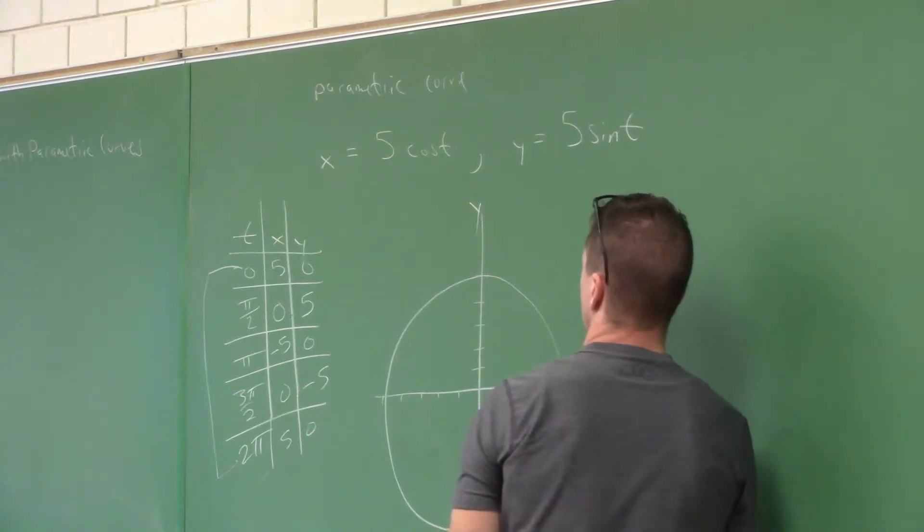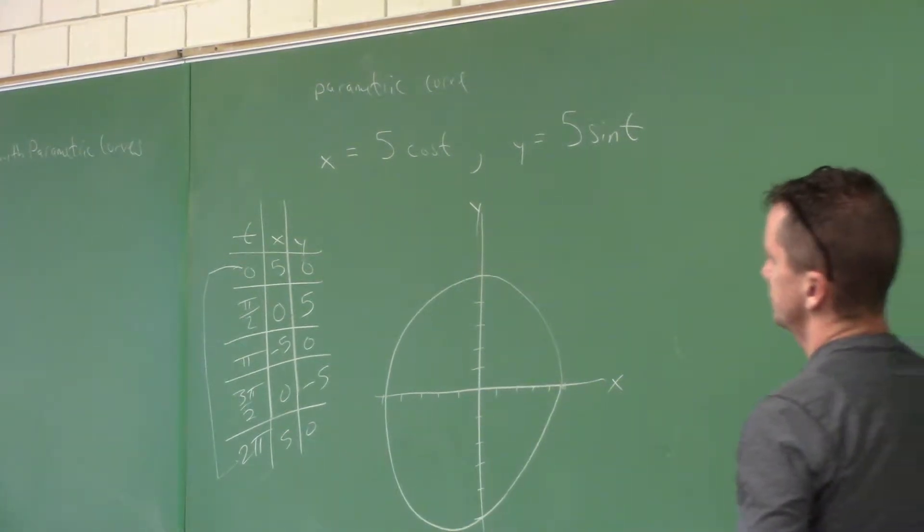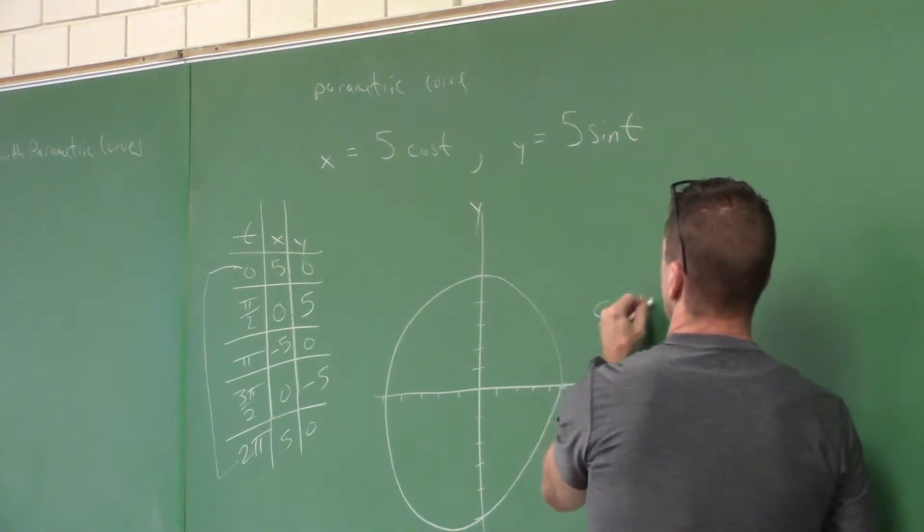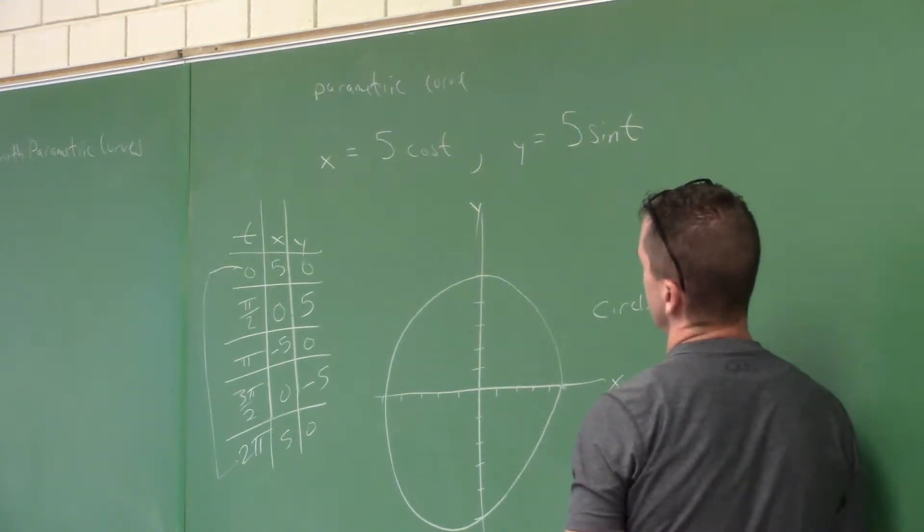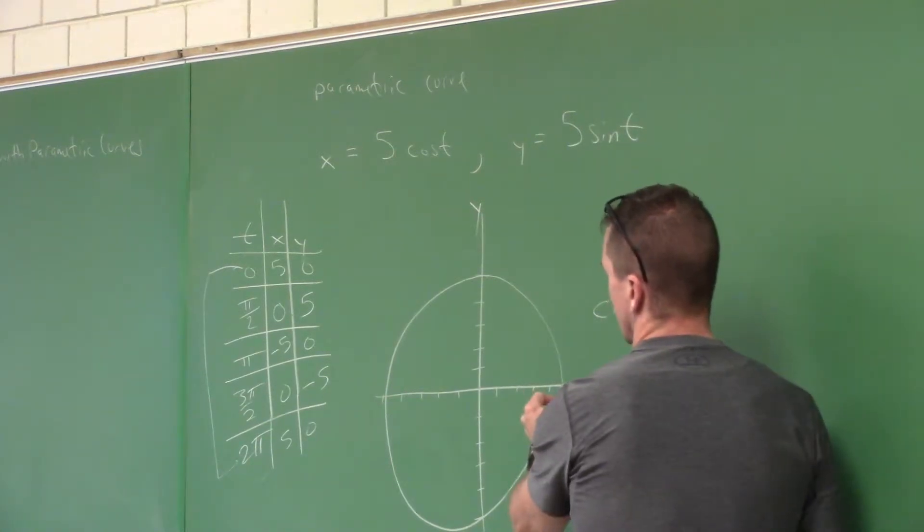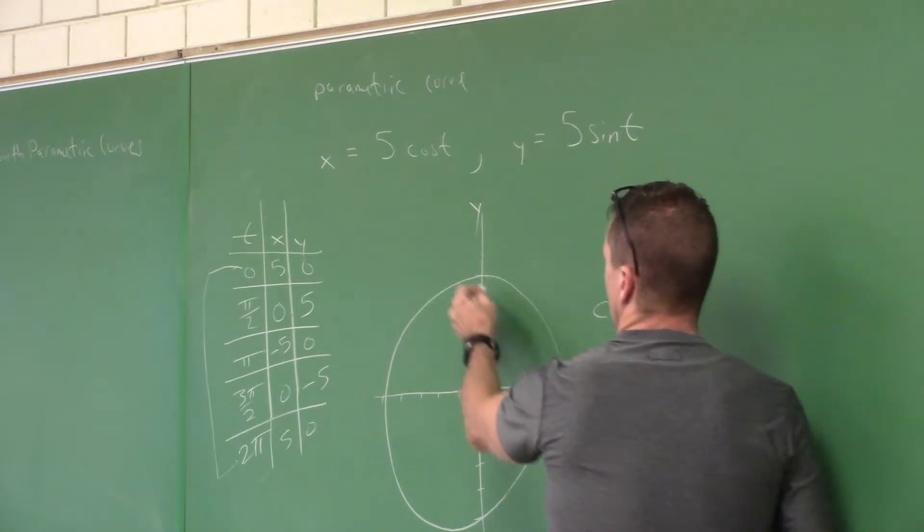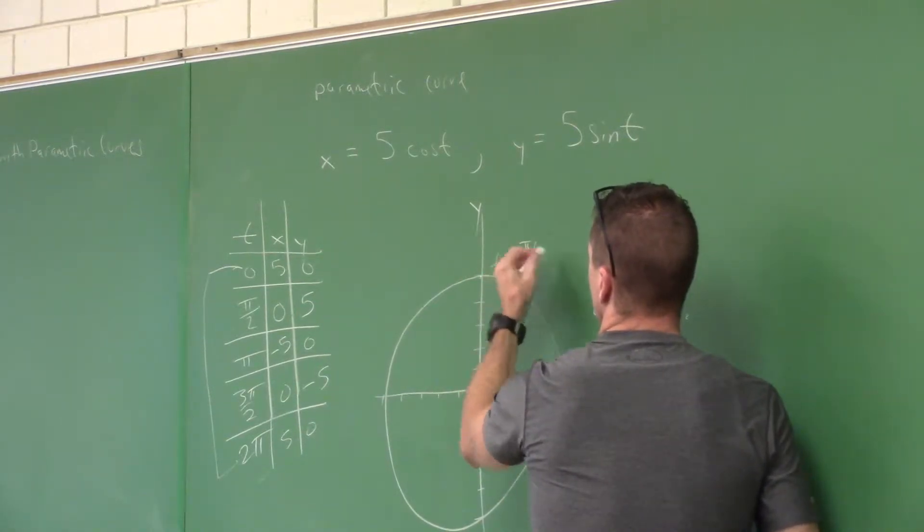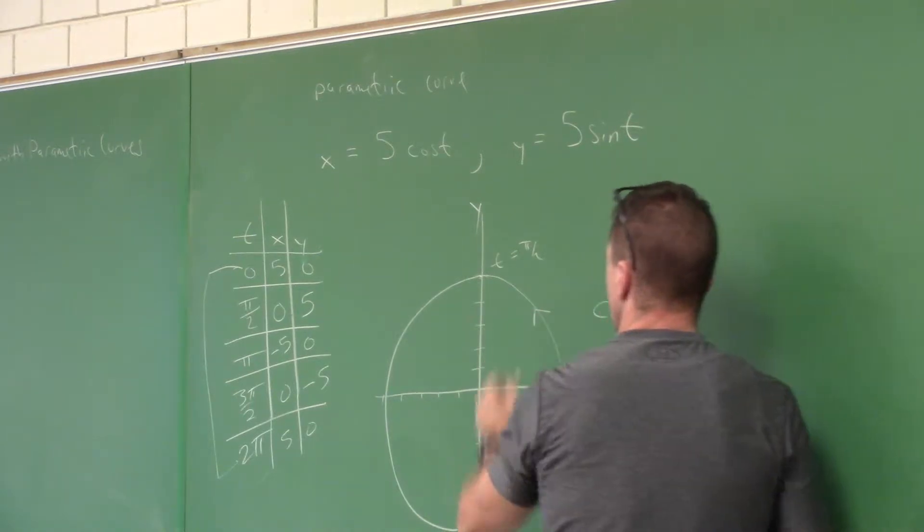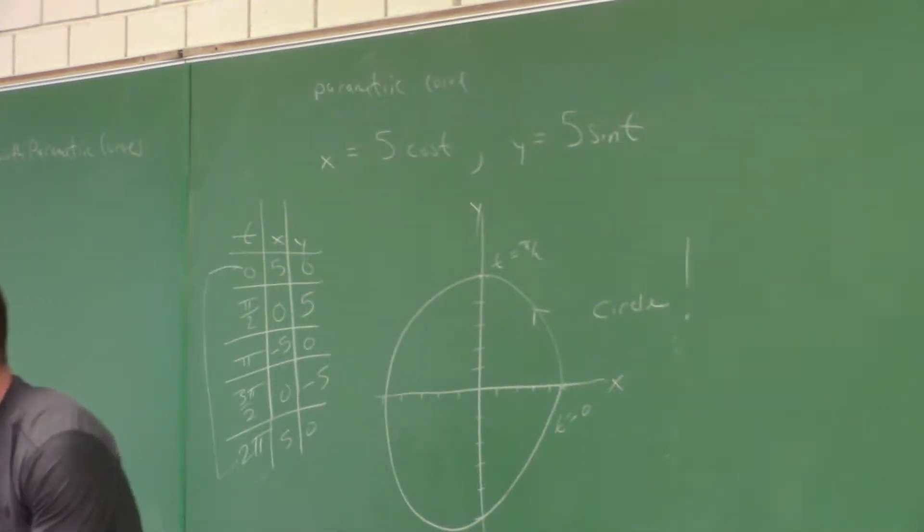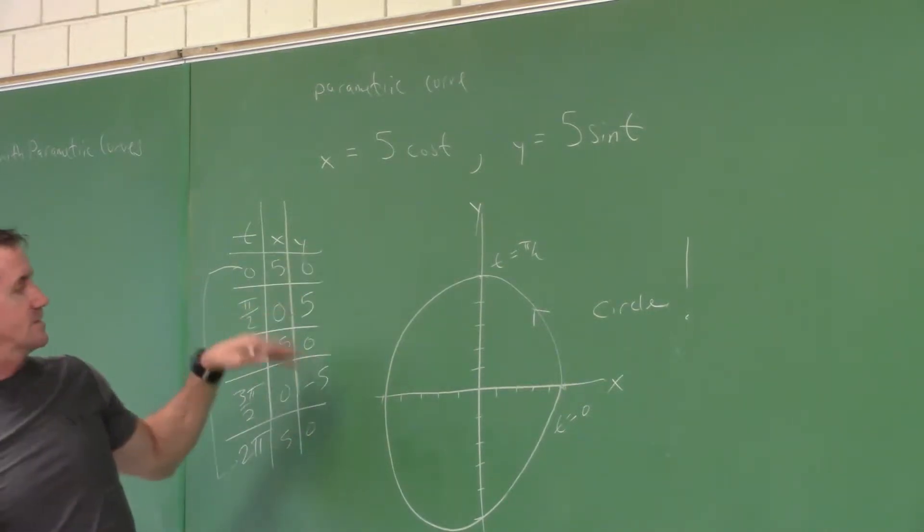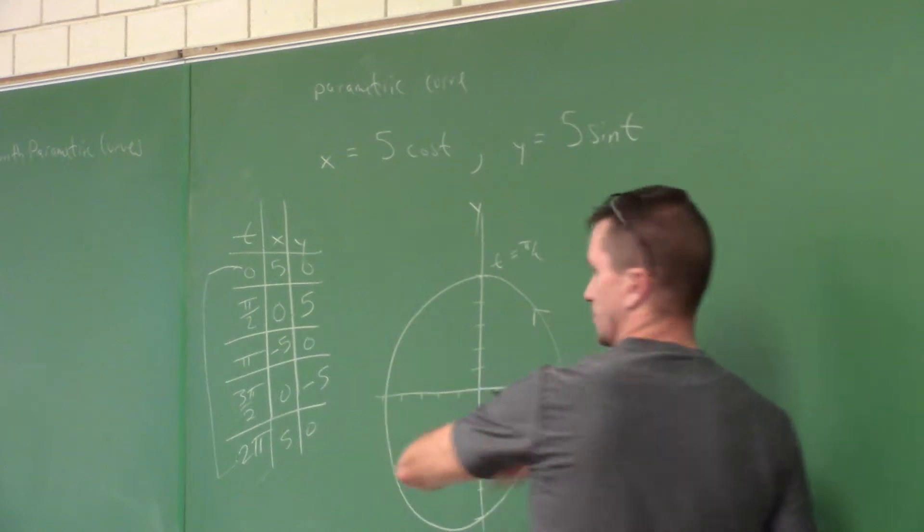So this is just a circle. Which way is it going though? As t increases, that way or this way? It's going counterclockwise. It was at 5,0 at t equals 0, up here at t equals π/2, and it was going this way. I'll just put an arrow to indicate the direction. I only plotted positive numbers, but this gave us the full curve.